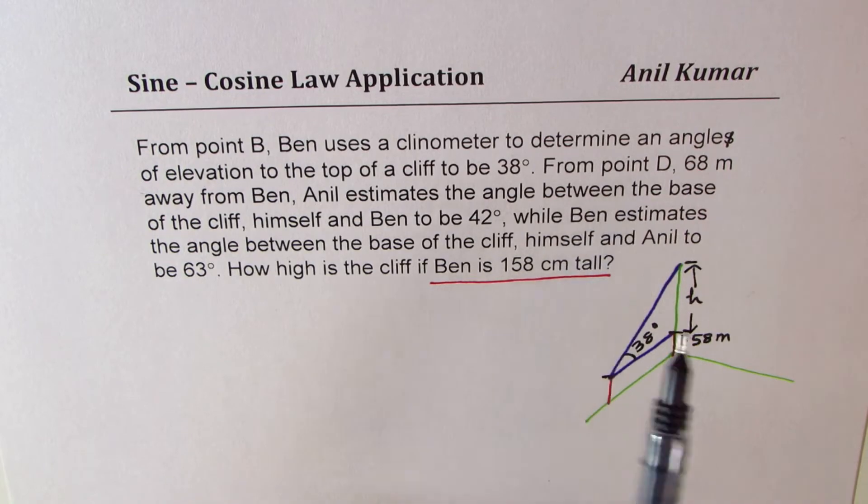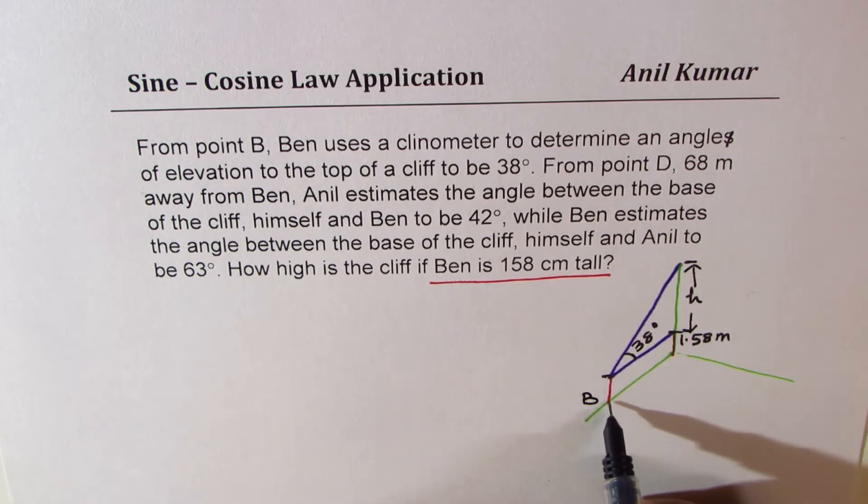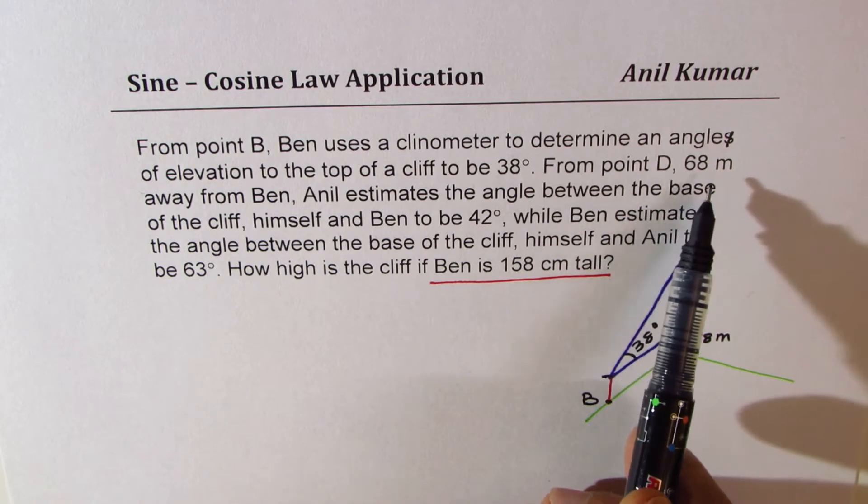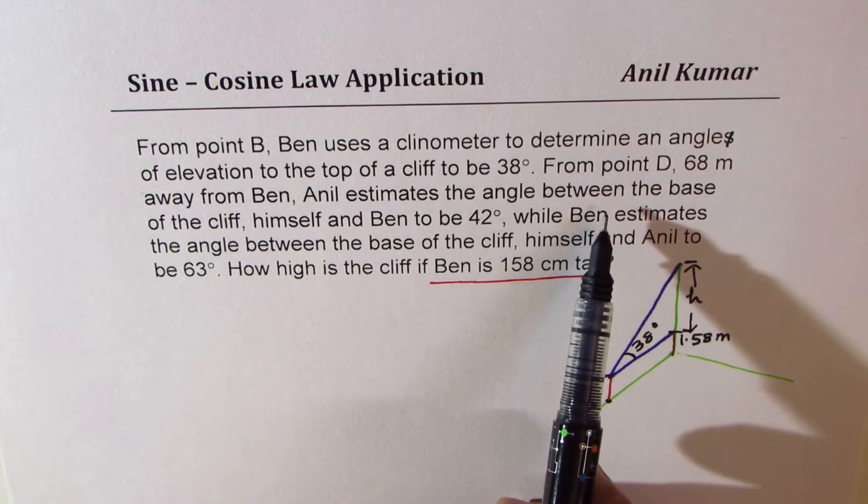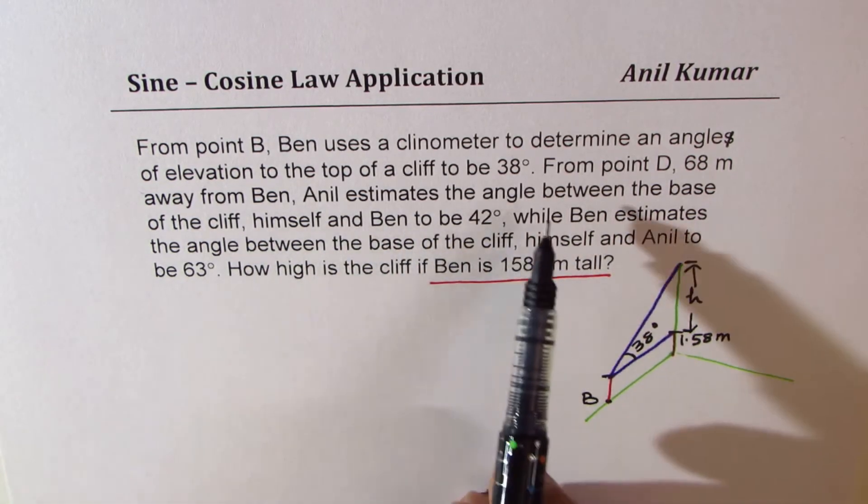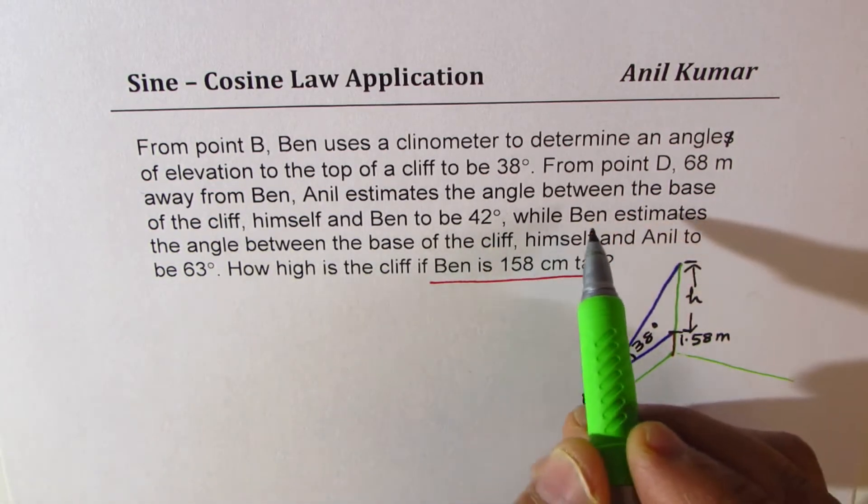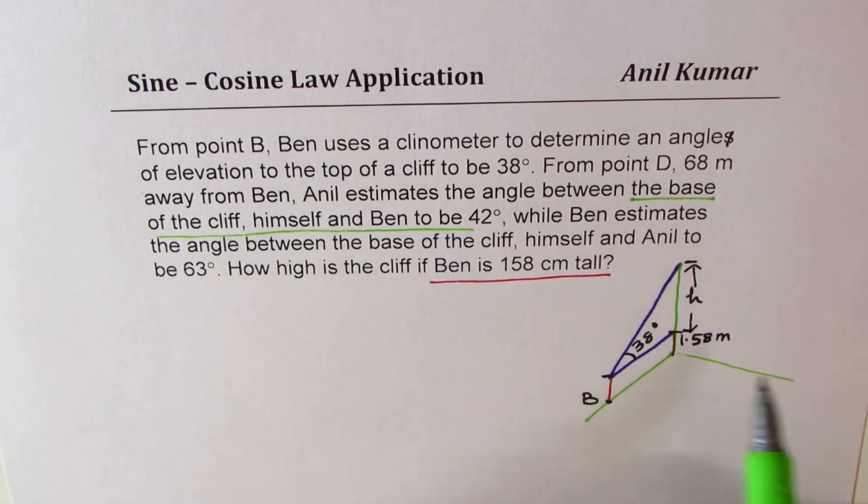Now, from point D, this was point B for us. From point B, so we'll call this as point B. Now, from point D, 68 meters away from Ben, Anil estimates the angle between the base of the cliff, himself, and Ben. So angle is between, let's try to understand, angle between base of the cliff, himself, and Ben. Base, himself, and Ben. You see that?